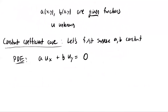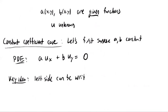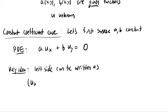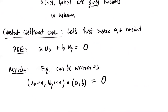The key idea is to observe that the left-hand side can be written in vector notation using the dot product. The vector (Ux, Uy) dotted with (A, B) set equal to zero. The vector with first and second partial derivatives in its components is just the gradient of U, so this is the gradient of U at point (x, y) dotted with the vector (A, B), set equal to zero.